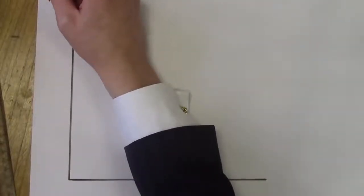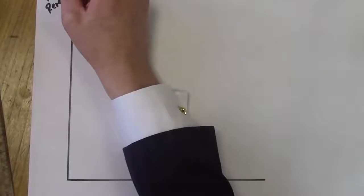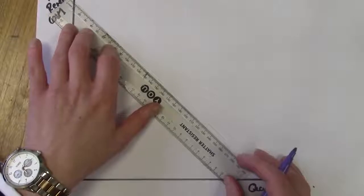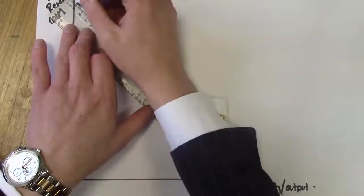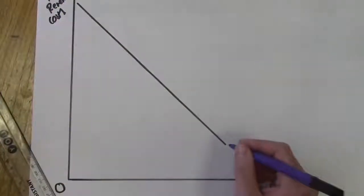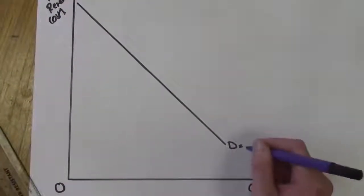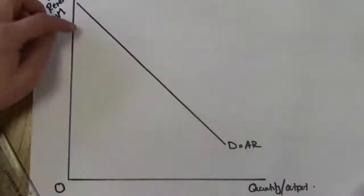Now starting off labeling our y-axis, we've got price, we've also got revenue, and we've also got costs. Our x-axis, we're ultimately looking at quantity, and I put a zero in the corner. Now, a few things to sort of get right first of all. First thing we're going to do is our demand curve. Now unlike the perfectly competitive curve, the demand curve for monopoly is downward sloping and we would say it's relatively inelastic as well.